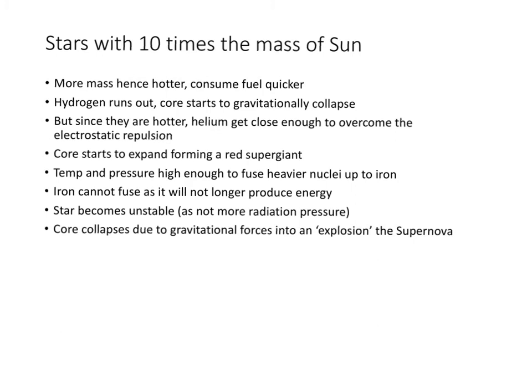What about stars that are 10 times more than the mass of our Sun? They have more mass, so they are much hotter and consume their fuel much quicker. Whereas a small mass star will live billions of years, a large mass star will live for only millions of years — a much bigger difference in lifetime. When larger, more massive stars move off the main sequence, they are already much brighter than lower mass stars. They will start running out of hydrogen, meaning no more radiation or gas pressure outwards, so the core will start to gravitationally collapse.